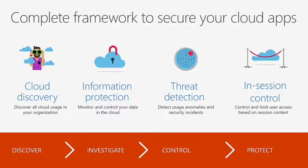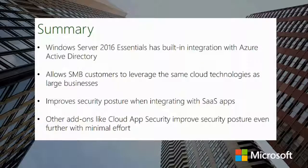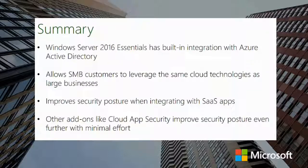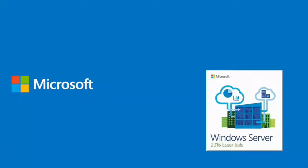No longer do they have to pay exorbitant fees to get the same types of features available in large organizations. In summary, Windows Server 2016 Essentials has built-in integration with Azure Active Directory, allowing SMB customers to leverage the same cloud technologies as large businesses, improving security posture when integrating with SaaS applications. Add-ons like Cloud App Security improve security posture even further with minimal effort — this represents a significant set of capabilities for small businesses. Thank you for watching.